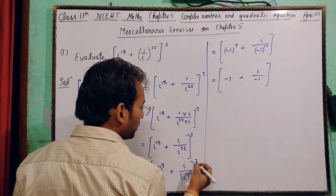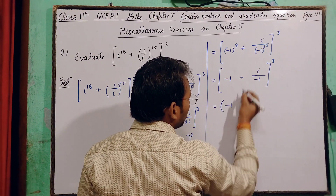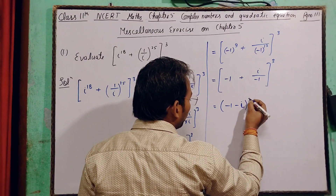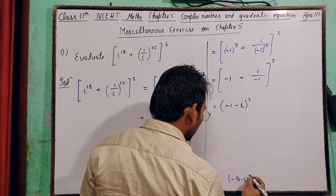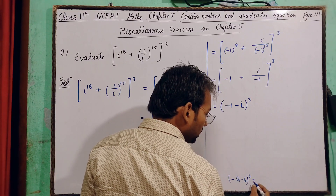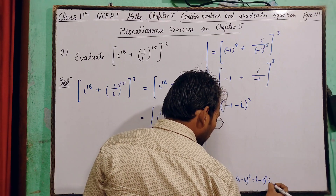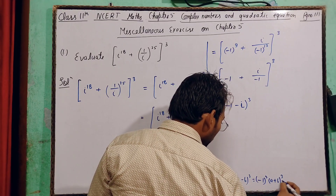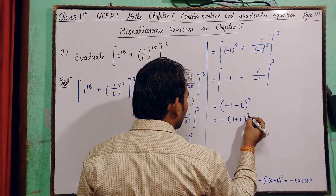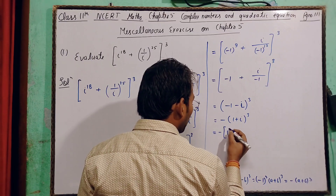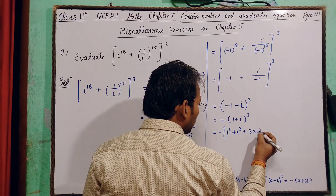यह whole power 3 भी लागू होगा: (-1 - i)^3। Minus का common factor लेंगे: -1 × (1 + i)^3। (a + b)³ = a³ + b³ + 3ab(a + b) का formula लगाएंगे, तो यह -(1 + i)^3 हो जाएगा।